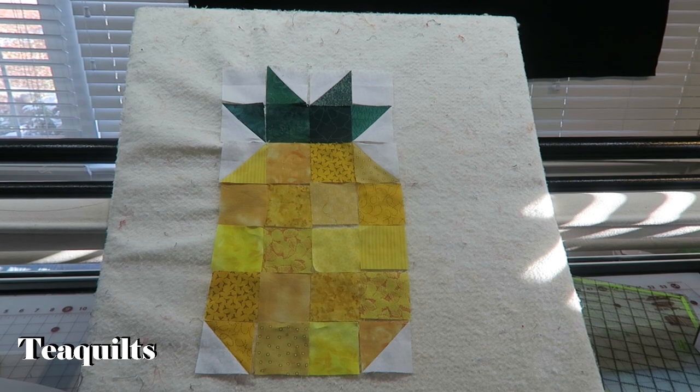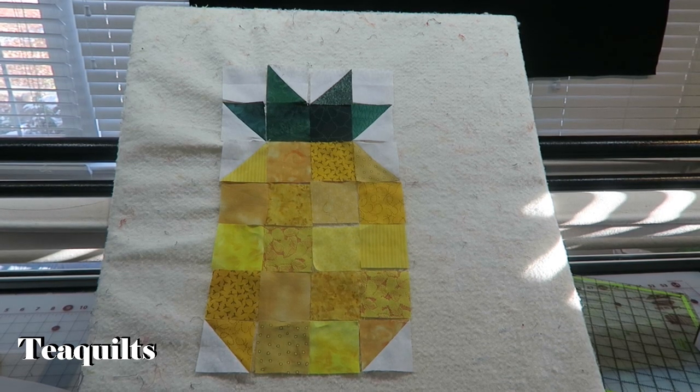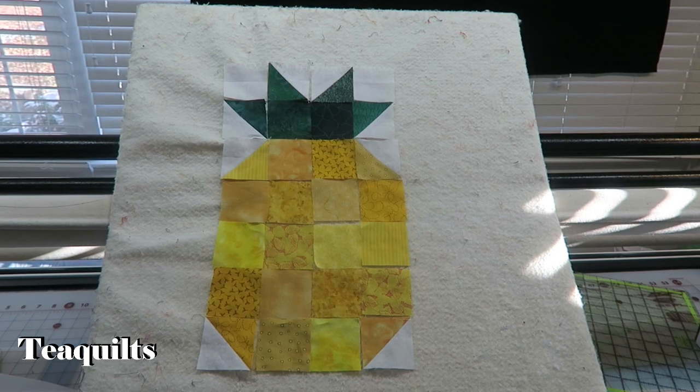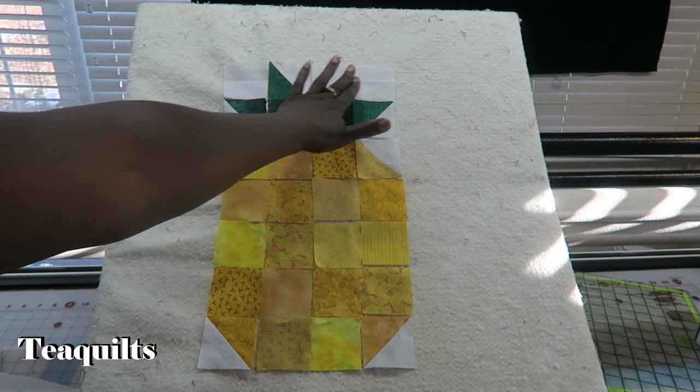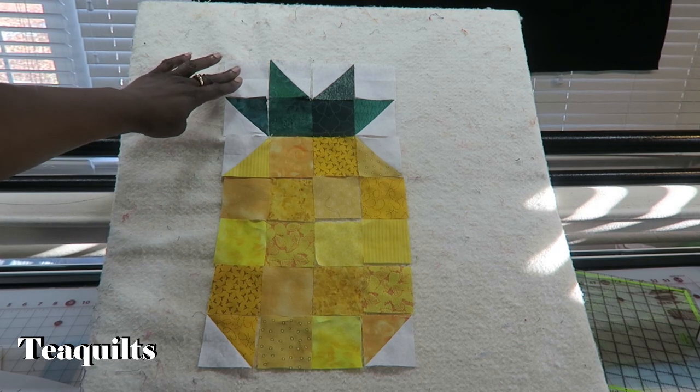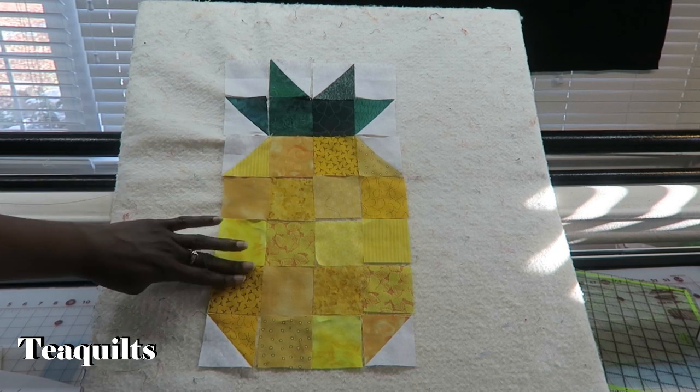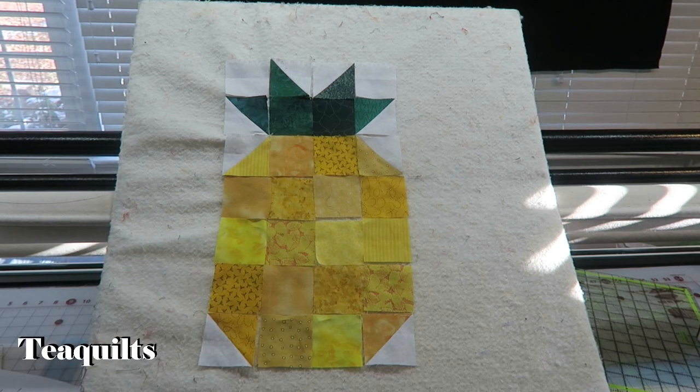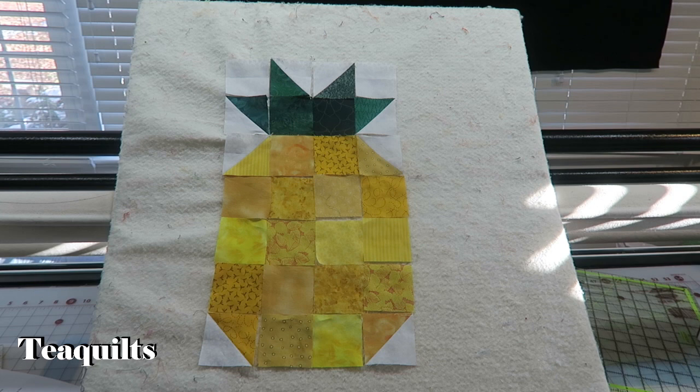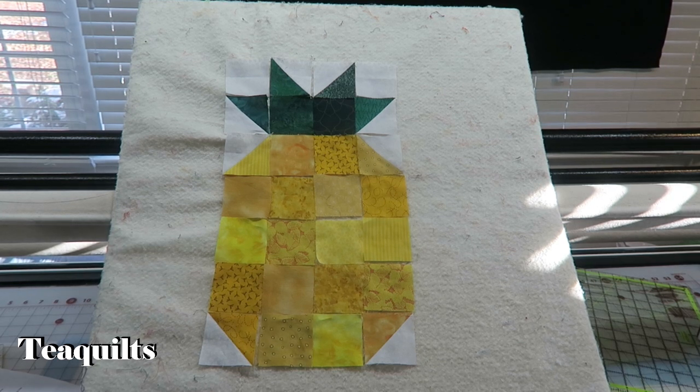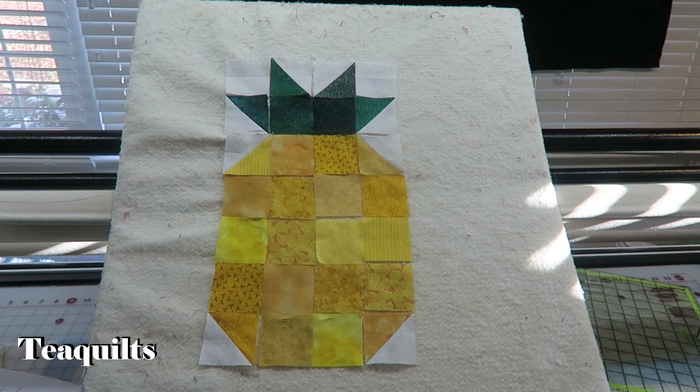Here's the pineapple layout. It's actually laid out in a four by seven setting, so you have four blocks going across and seven blocks going down. You need 28 two and a half inch blocks to finish. They could be either solid squares or they can be half-square triangle squares.